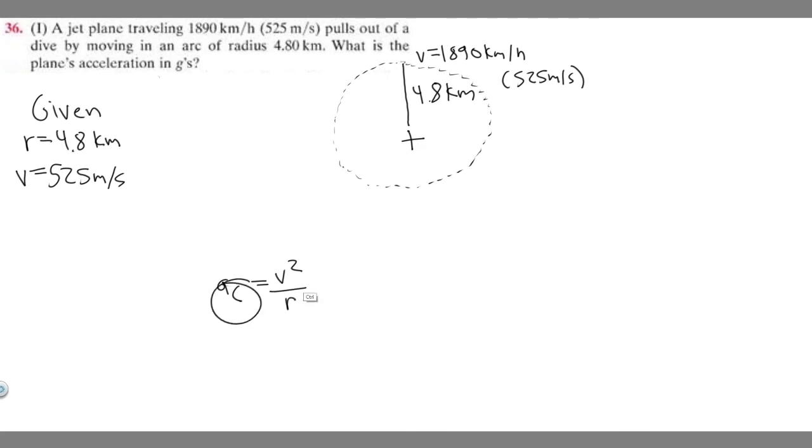So if you want to find the centripetal acceleration, you just take your velocity, square it, and divide it by r. And when we do this, our units have to align. Notice how this is in kilometers, and this is in meters per second. So we have to convert this to meters.